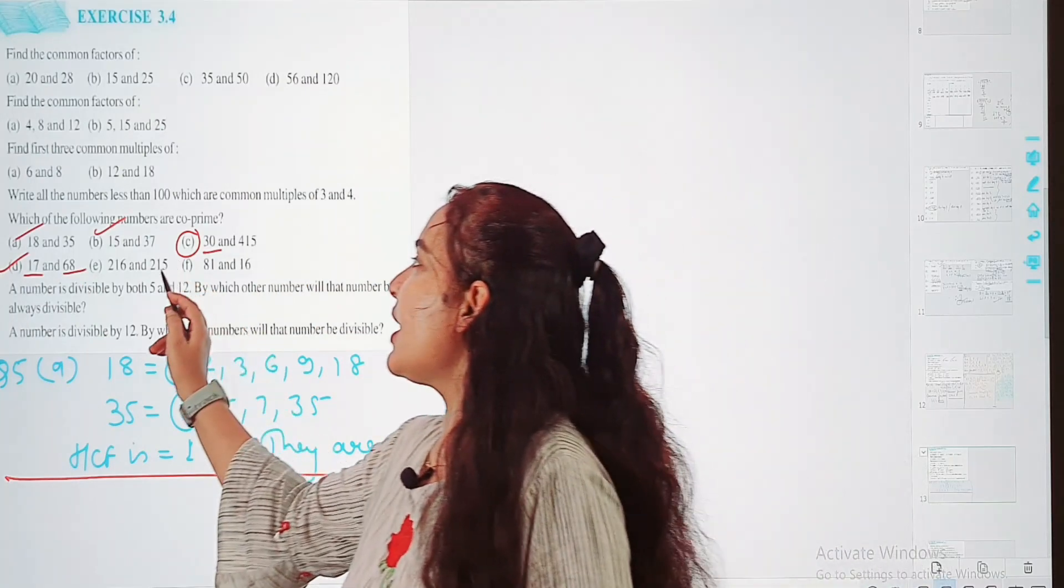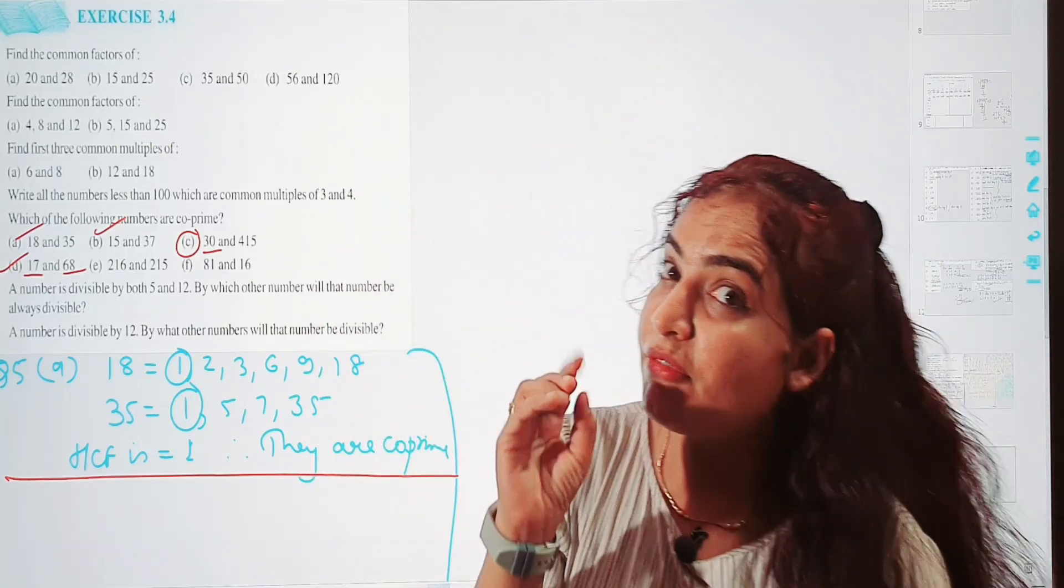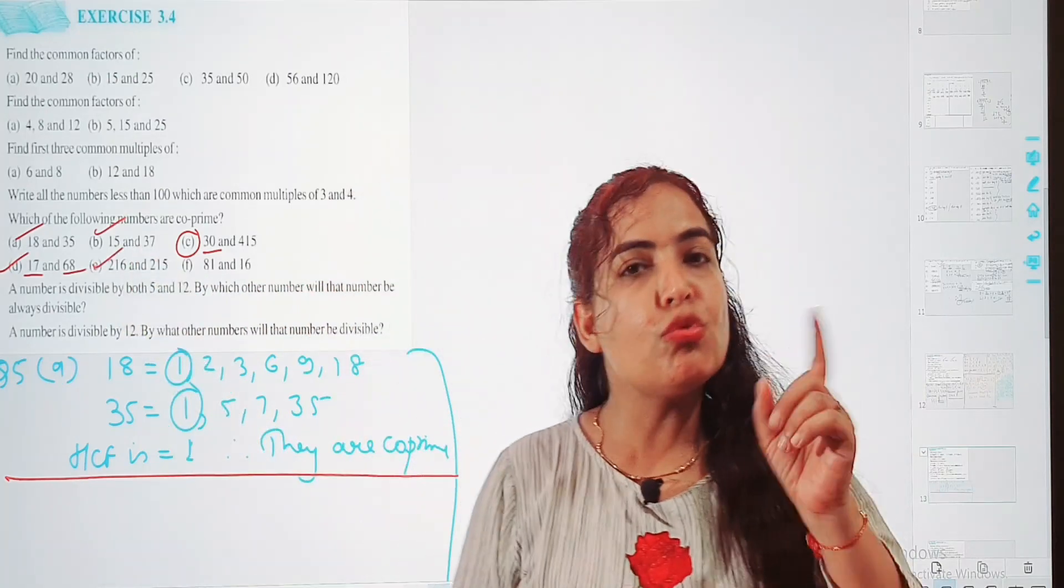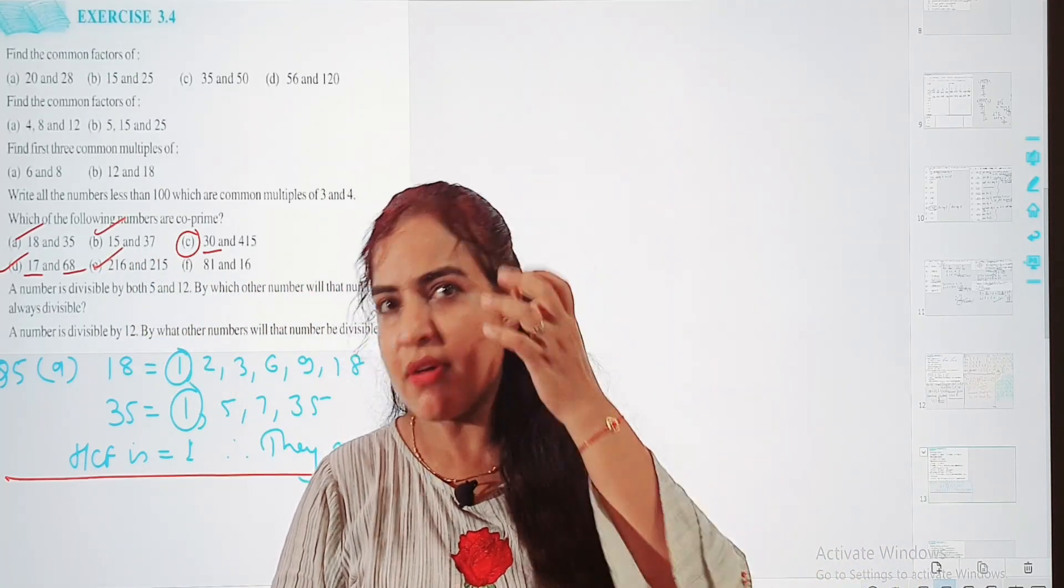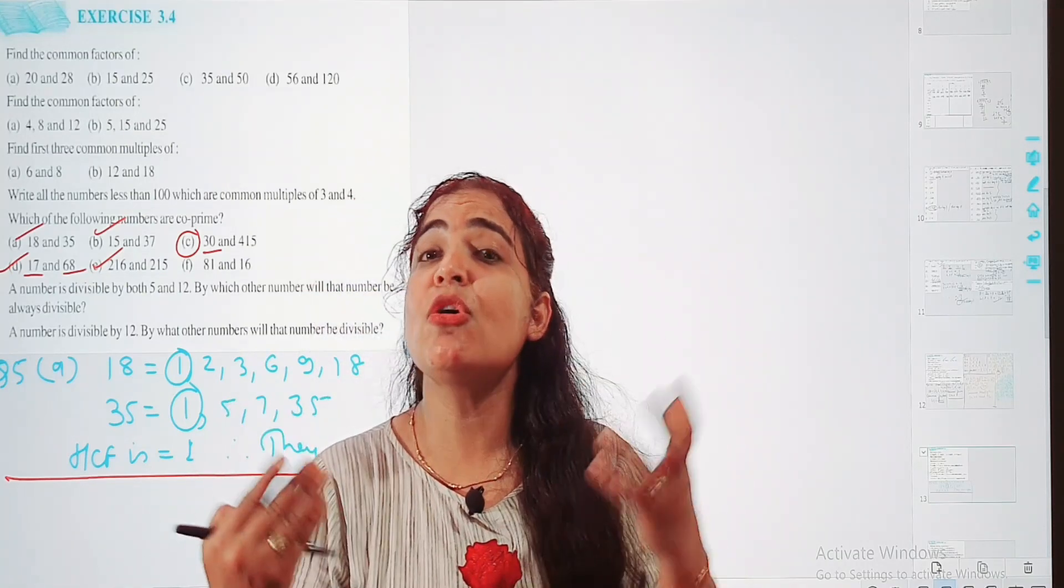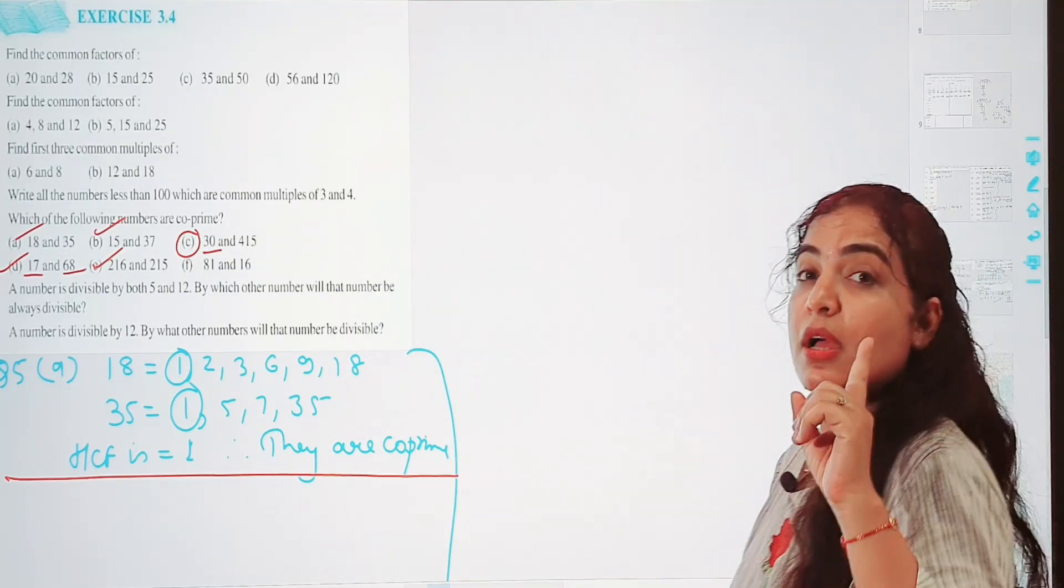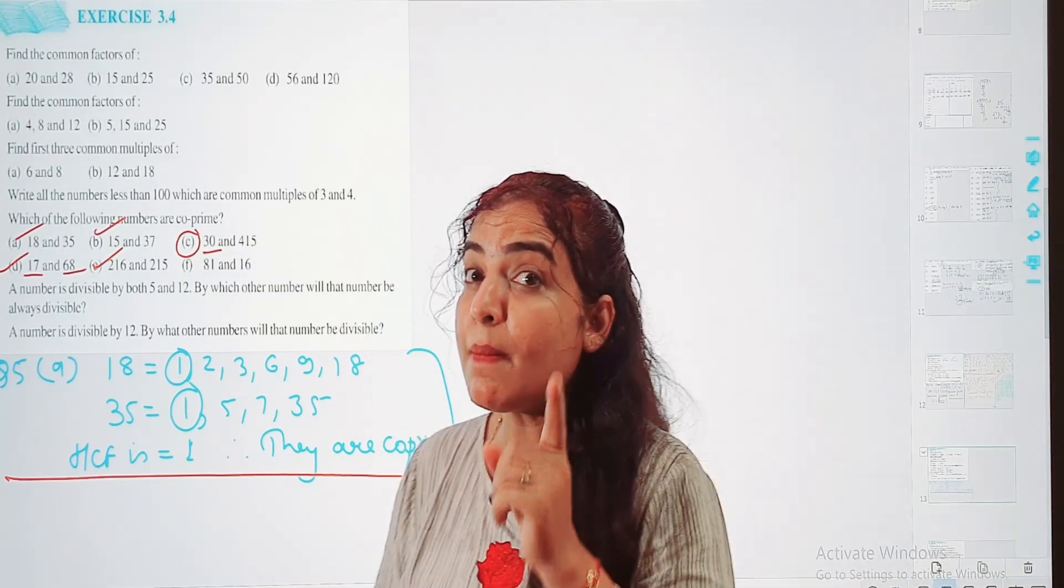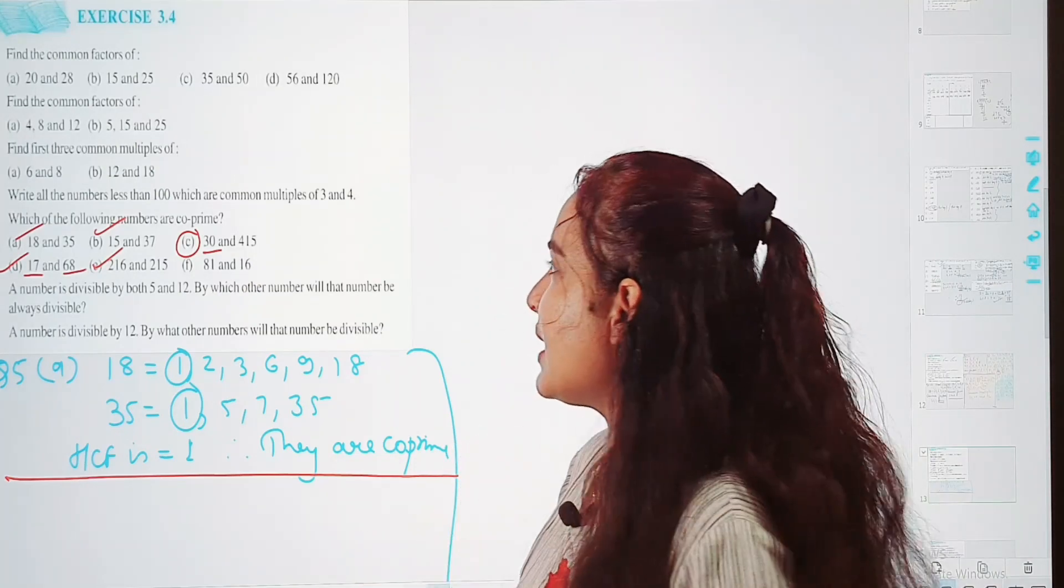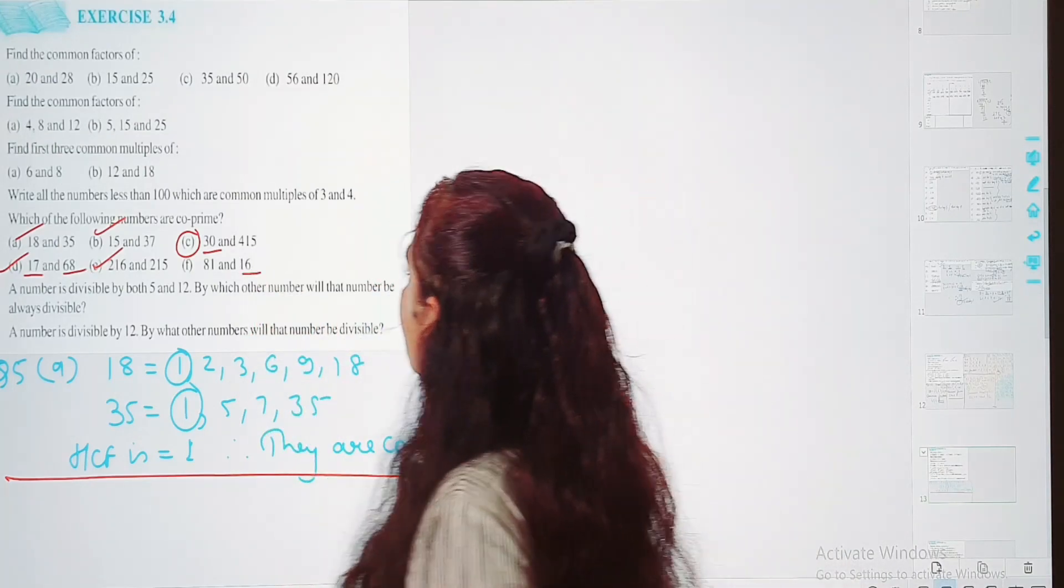15 or 16, 2 consecutive numbers ke bhi, which may bhi kabhi bhi 1 ke alaaba koji bhi HCF nahi hoota hai. So ye bhi aapka co-prime number hai. 2 or 3 ke bhi ch mein HCF 1 hi hai, 3 or 4 ke bich ka HCF 1 hi hai. In ke bich ka common factor 1. Jab ekhi common factor ho aur wo sri 1, tab hootai hai wo dho numbers co-prime numbers. You can read the definition and you will see that yes, definitely it is right.